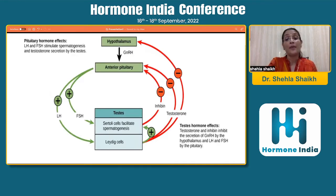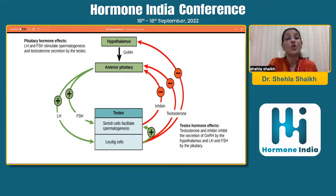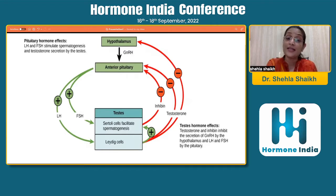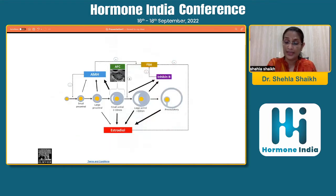Inhibin B has an inhibitory effect — almost a negative feedback effect — on the hypothalamus and on LH and FSH secretion by the pituitary. LH and FSH stimulate spermatogenesis and testosterone secretion by the testes, and the Sertoli cells facilitate this spermatogenesis. But once spermatogenesis crosses a certain threshold, inhibin B levels will have a negative inhibitory influence on FSH, very tightly controlling the entire process of spermatogenesis.